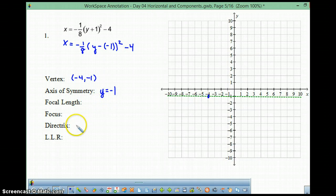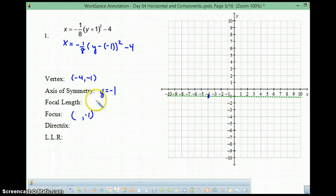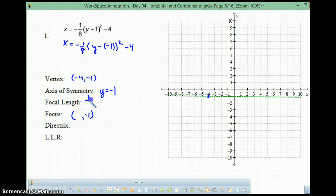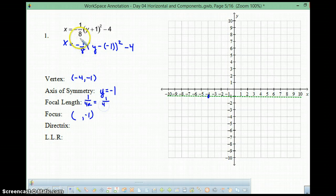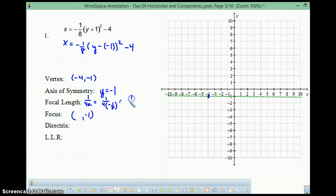And I better make sure that my focus is going to be y equals negative 1. It should lie right on that line. All right, what else can I figure out? Well, let's do the focal length. 1 over 4a equals 1 over 4a. In this case, it's negative 1 eighth. So, this becomes 1 over negative 4 over 8, which equals negative 2.